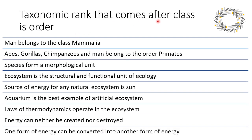Taxonomic rank that comes after class is order. Man belongs to the class Mammalia. Apes, gorillas, chimpanzees and man belong to the order Primates. Species form a morphological unit.